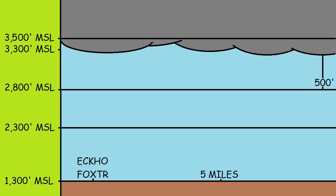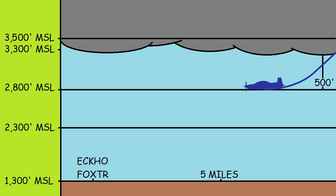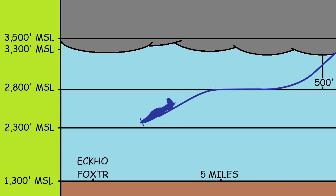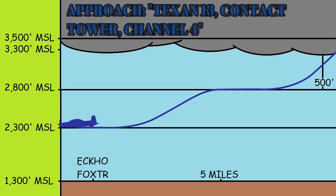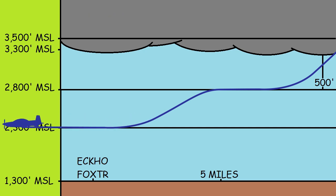Scenario 3 is the same situation as weather better than restricted pattern. It means the cloud ceiling is 3,300 feet MSL or higher, and at 2,800 feet MSL and 5 miles from radar release, you say your call sign, Echo or Foxtrot, and Approach will say 'contact tower channel 4.'